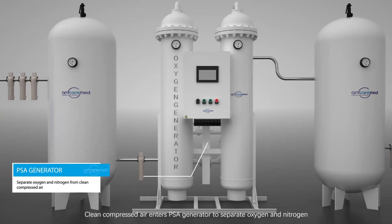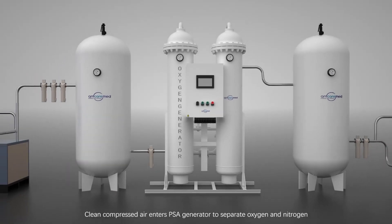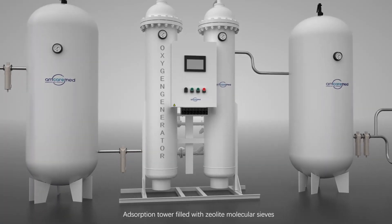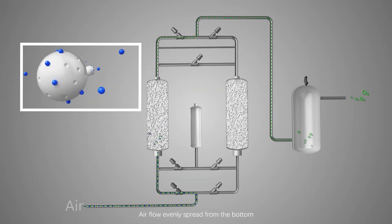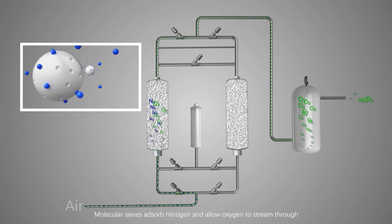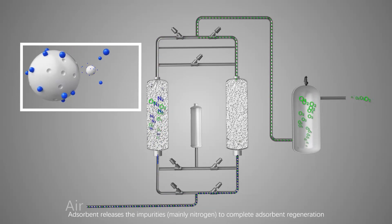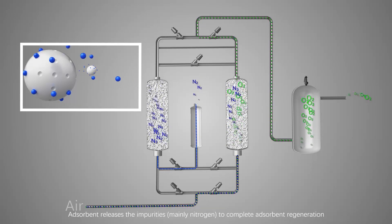Clean compressed air enters the PSA generator to separate oxygen and nitrogen. The absorption tower is filled with zeolite molecular sieves. Air flow spreads evenly from the bottom, and the molecular sieves adsorb nitrogen, allowing oxygen to stream through. The adsorbent then releases the impurities — mainly nitrogen — to complete adsorbent regeneration.